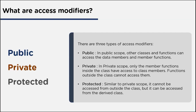In the protected access modifier, similar to private, it cannot be accessed from outside the class, but it can be accessed from the derived class — also called the child class. Additionally, the protected member of a class can be accessed from a friend function.